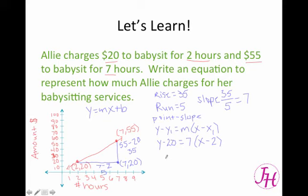And then it's just a matter of simplifying the equation. So we leave the y minus 20 the way it is. And then we have 7x minus 14. Keep in mind that's a 2, not a 1. All right, so we're going to add the 20 over and we get 7x plus 6. So our equation is y equals 7x plus 6. So now we can figure out how much Allie is going to charge for any number of hours.